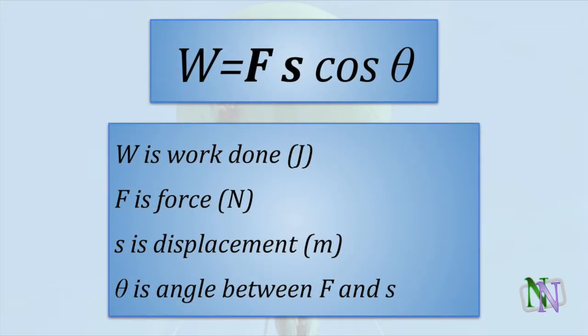Here is the formula for work. If the force and the displacement are acting in the same direction, then we multiply the force by the displacement. But if there is an angle theta between the force and the direction in which the object travels, then we are only interested in the components of the force and displacement which act in the same direction. Then we multiply F, S and cosine theta. Work is measured in joules.